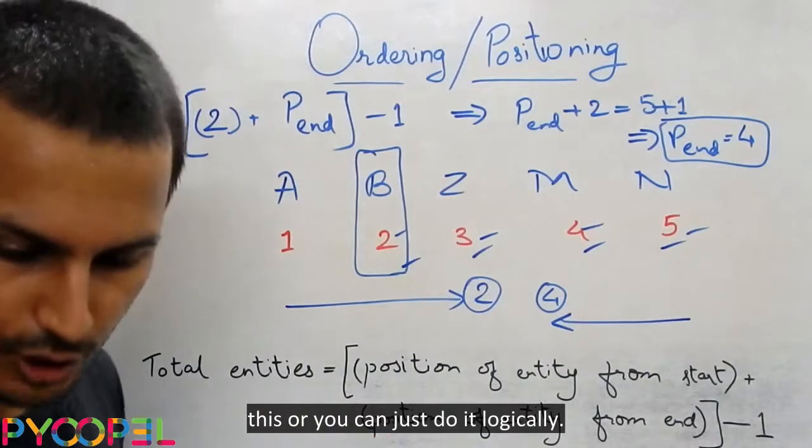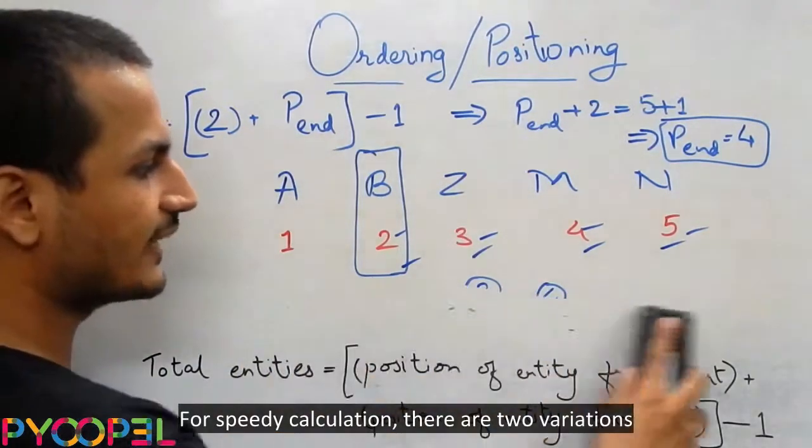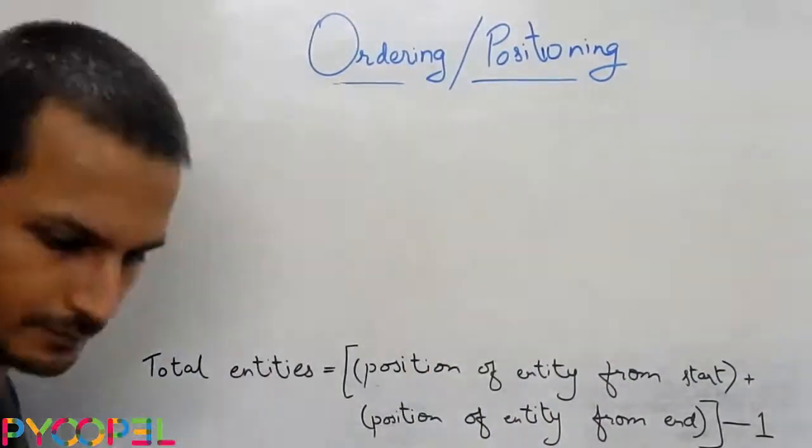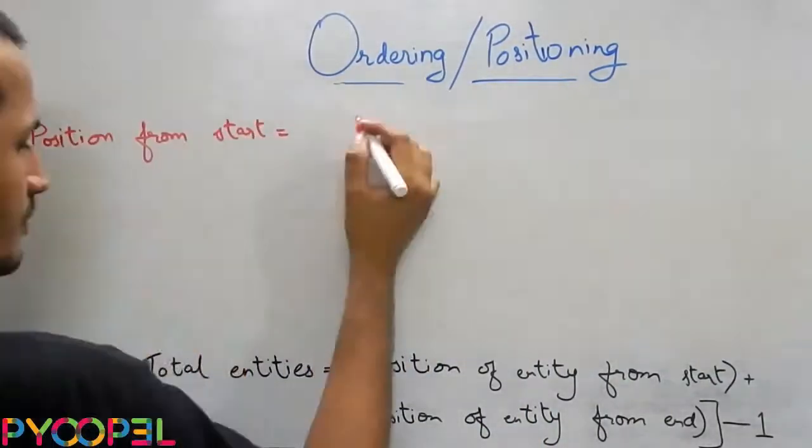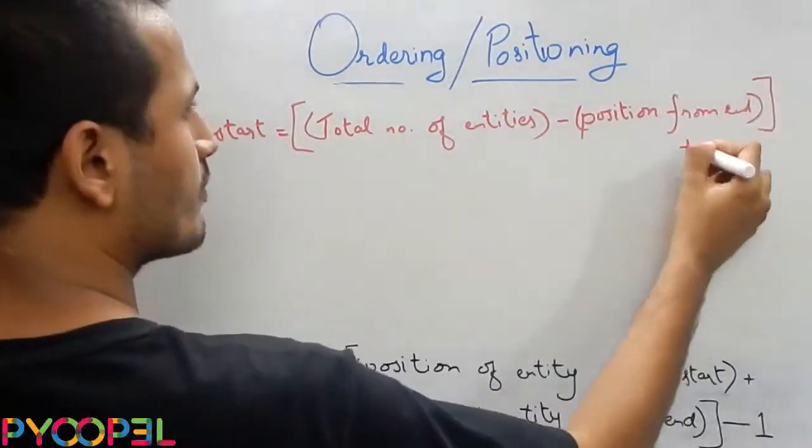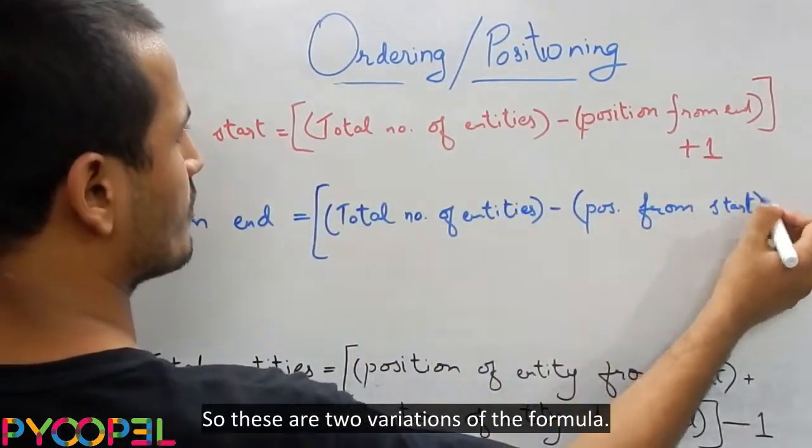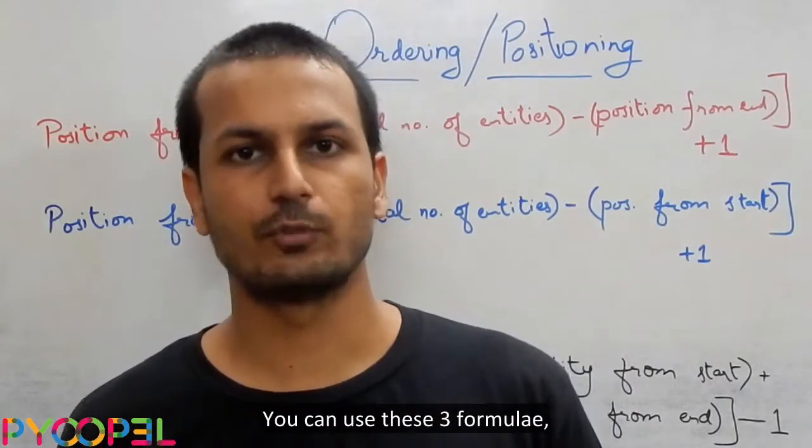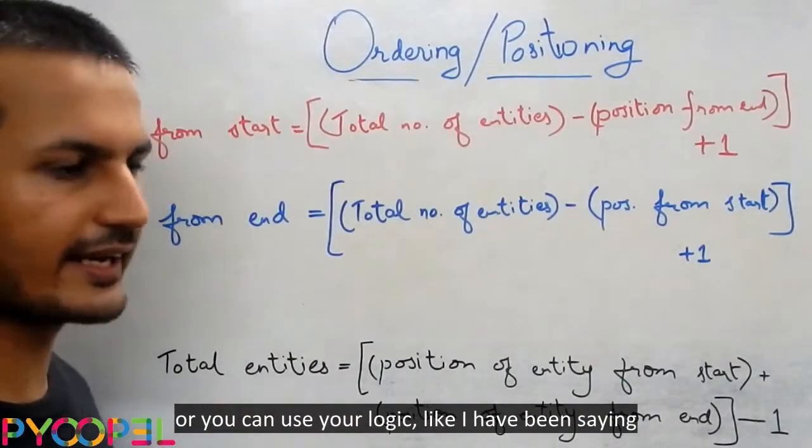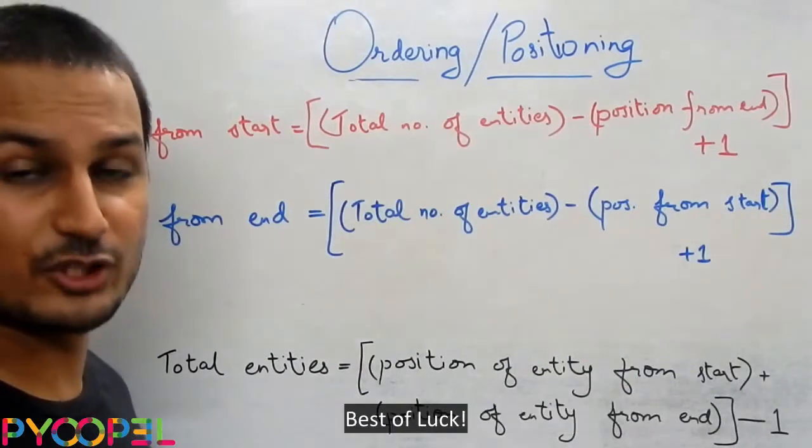Either you can remember this or you can just do it logically. For speedy calculation, there are two variations of this formula. So these are two variations of the formula. You can use these three formulae or you can use your logic, like I have been saying, and you can solve all alternative positioning questions like this. Best of luck.